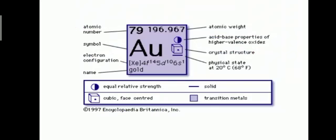The symbol of gold is AU. Its atomic number is 79 and its mass number is 196.96. Its electronic configuration is 4F14, 5D10 and 6S1. It exists in a crystal structure.